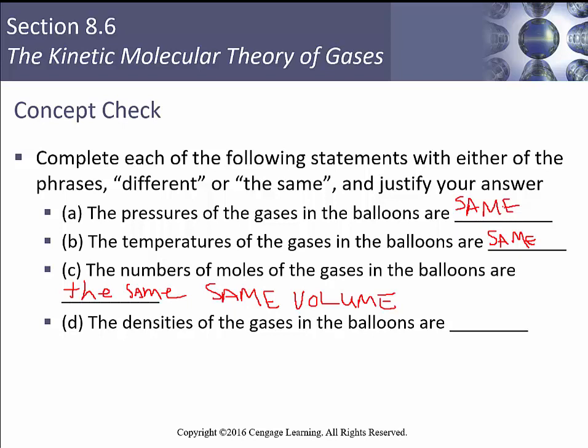The densities of the gases in the balloon are different. The two gases have different molecular masses, and therefore, if they're at the same volume with the same number of moles, they will have different masses — which means different masses divided by the same volume gives different densities.